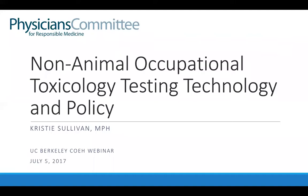CE credit is also available for registered nurses and this webinar may be eligible for industrial hygiene credits. If you wish to obtain credit, please register again at coehce.org and you must also complete the evaluation for the webinar, which you will be sent by email. After that, you will be emailed your certificate of completion. The webinar will be archived and a link will be provided to all attendees, and it will also be available on coehce.org for CE credit only.